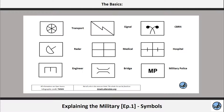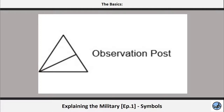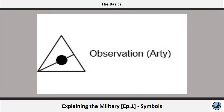Signal units are represented by a lightning symbol, easily remembered as electricity passing through an antenna. Radar units — well, this is a radar dish. Observation post is a small triangle, remembered as a small raised position. If it is just an observation post, it has the recon line, while if it is an artillery observation post, it will have the artillery dot.